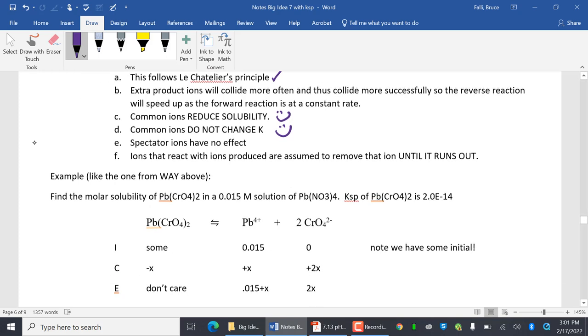Example. Like the one from way above. So that means I'm using this lead chromate again that we used before. And I'm using its 2E-14. But in this case, we're going to find the molar solubility of lead 4 chromate when I'm in a 0.015 solution of lead 4 nitrate. Do you see how this is a source of lead 4? And nitrate, we've been ignoring nitrate for months now. It's the exact same thing. Only initially, we have some initial. Yay, 0.015.